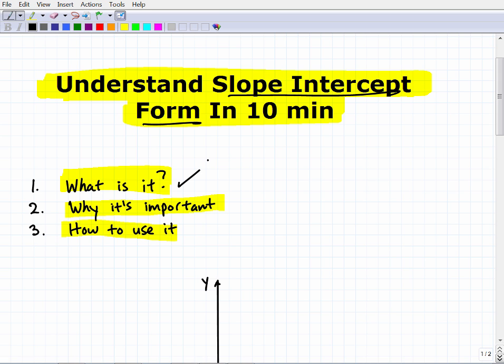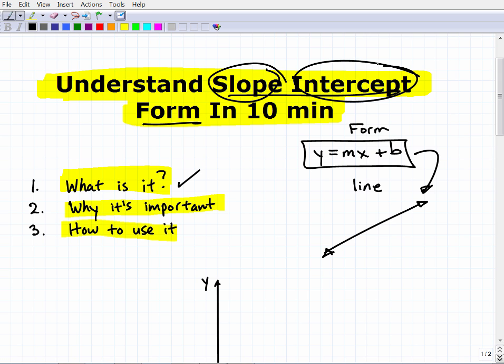Okay, so the slope-intercept form is basically this. It's y equals mx plus b, right? So this is the equation, or the form, what we call a form. It's a general format of a what? Of a line, okay? A line that you graph on xy-axis. So this form here is one type of form that we can read. It's a format, okay? We can look at it and easily be able to graph lines from it.